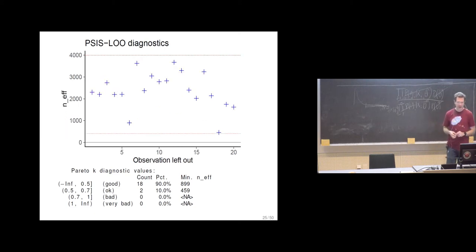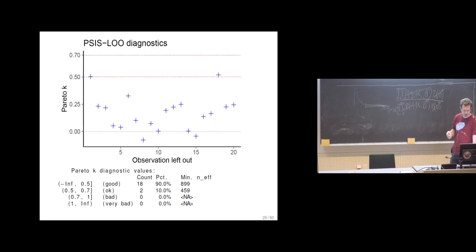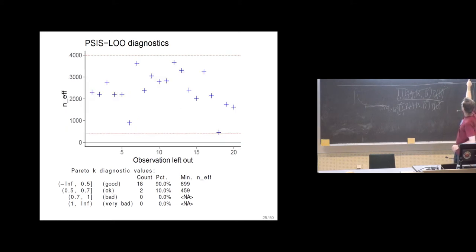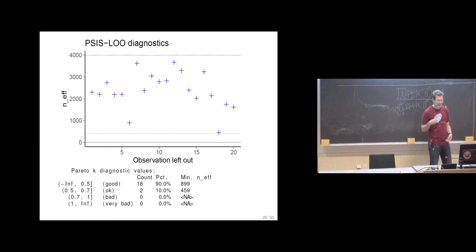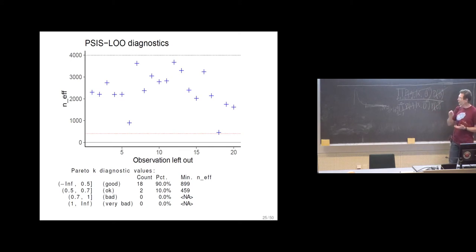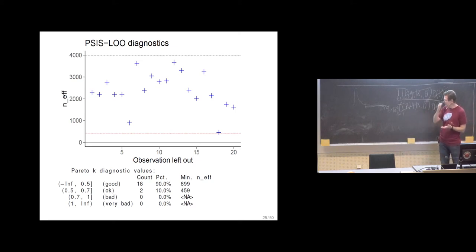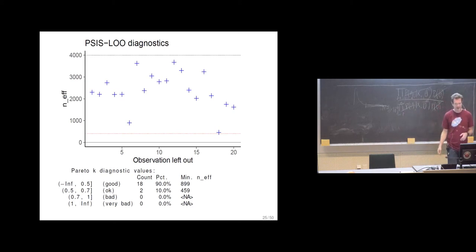Here is the same with the effective sample size. It's usual that if you look at the largest Pareto k̂ — which was for the 18th observation — then correspondingly the smallest effective sample size was also for the 18th. It's typical that if we have some weights which are very large, that makes the effective sample size small, but that also makes the tail thickness such that the Pareto k̂ is then usually large.